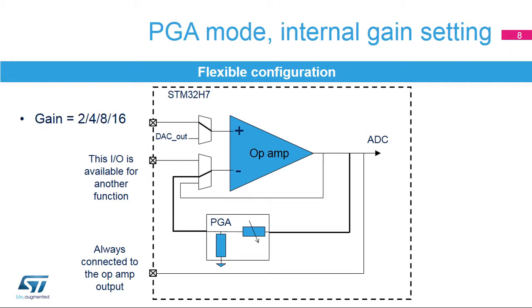The op-amps support non-inverting amplifier mode with four fixed gains available. The feedback resistors can be selected to have a gain of 2, 4, 8, or 16 to support the programmable gain amplifier function.